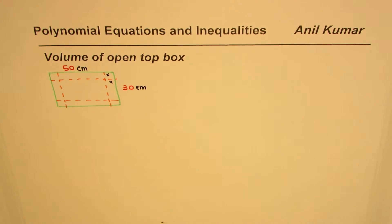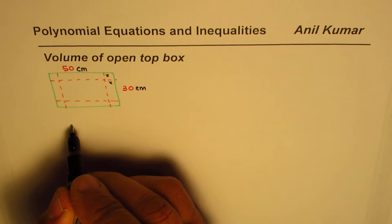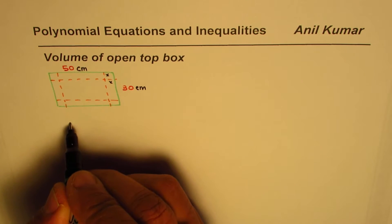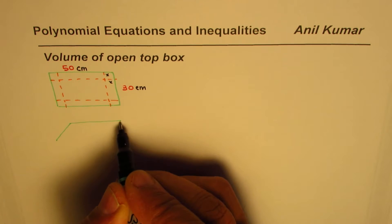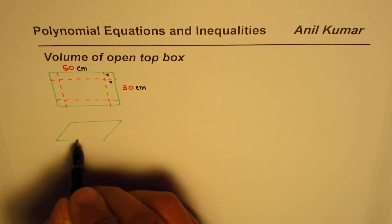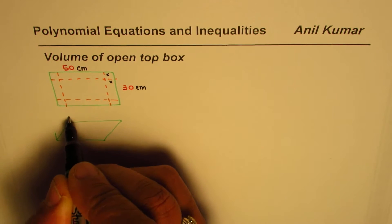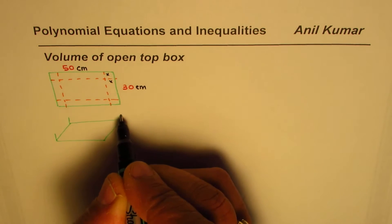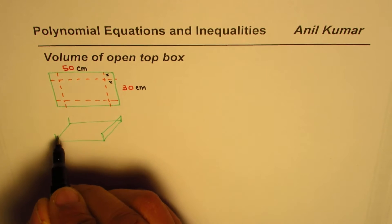Let the length of this piece be 50 and the width be 30 centimeters. If you fold along these lines you will get an open-top rectangular box — the base of the box with the fold of x forming the sides.